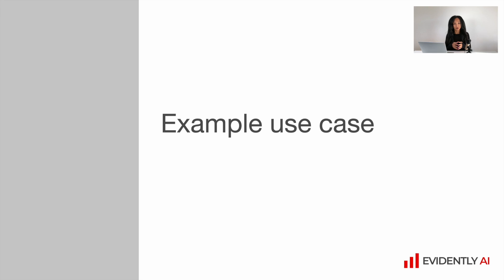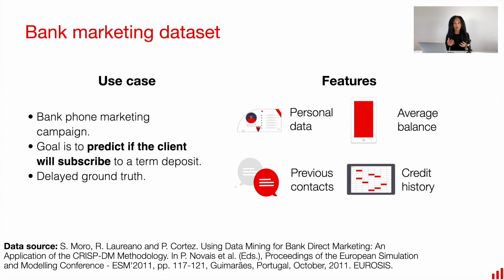During this module, we are going to apply all these learnings to a toy dataset — the bank marketing dataset. This is a publicly available dataset about a bank marketing campaign where the bank tries to persuade clients to subscribe to a term deposit via phone calls. The goal is to predict whether the client will subscribe or not. We have delayed ground truth because it often takes some time for clients to decide. The dataset includes personal data, average balance, information about previous contacts, and credit history.